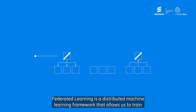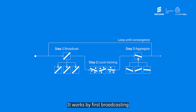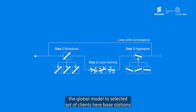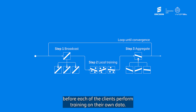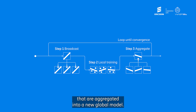Federated learning is a distributed machine learning framework that allows us to train a single global model without sending data to a central location. It works by first broadcasting the global model to a selected set of clients — here, base stations — before each client performs training on its own local data. Finally, the clients send back model updates that are aggregated into a new global model, and this process is repeated until training converges.